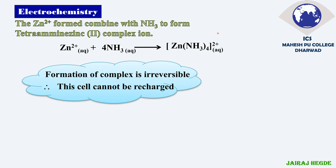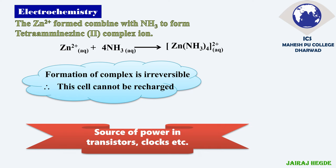Because of this complex formation, the cell can produce a constant 1.5 V of DC electricity until it dies. We use this dry cell for transistors, clocks, and electronic instruments like remote controls.